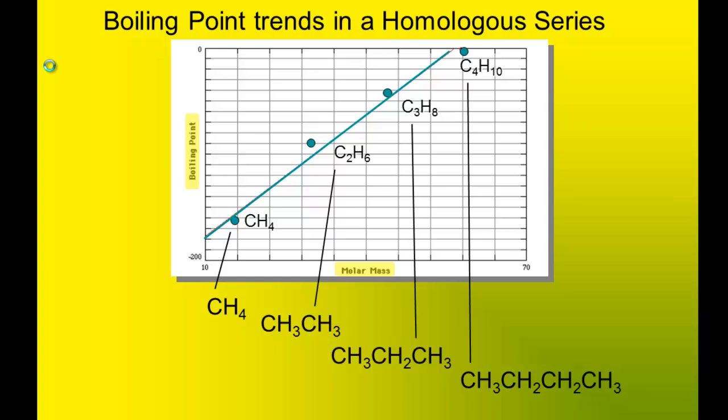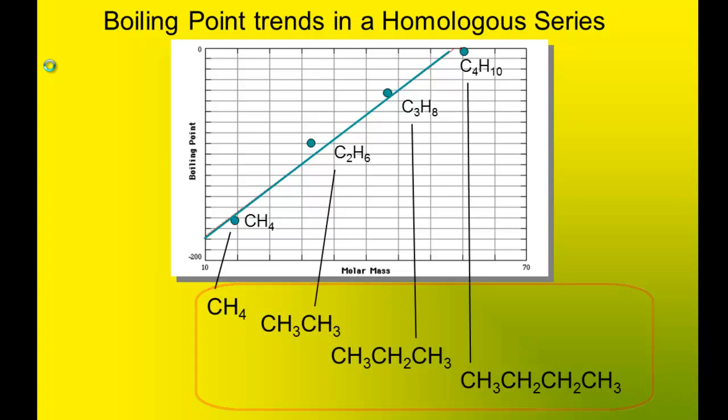Here's a graph correlating boiling point to molar mass for a homologous set of molecules — meaning the structures are very similar — specifically straight chain hydrocarbons. The smallest is CH4 and the largest is C4H10, with the condensed formula for each shown below the graph. All four of these molecules engage in induced dipole–induced dipole interactions. The heaviest molecule, C4H10, has the highest boiling point, while the lightest, CH4, has the lowest. There are two reasons why C4H10 has the highest boiling point: it is the heaviest, and it also has more surface area per molecule for induced dipole–induced dipole intermolecular attraction.